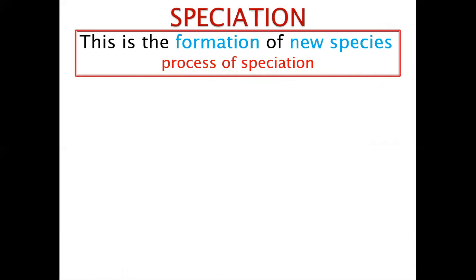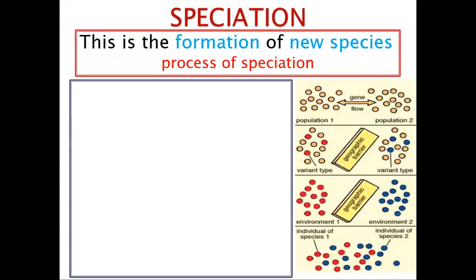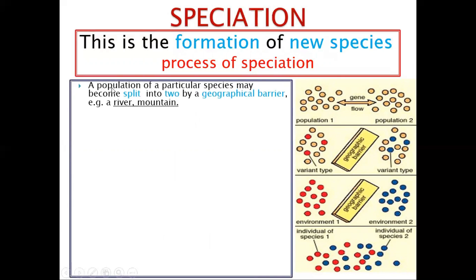So which process leads to the formation of new species? Let's look at the process which results in the formation of new species. Here you have a population — population 1 and population 2. These two populations can interbreed; they have the same kind of species, but now a geographical barrier has come in.